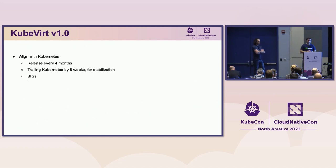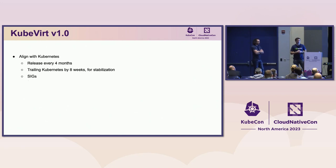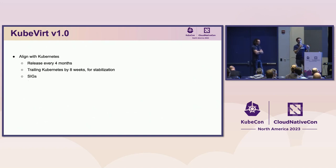Even Kubernetes went through this. When Kubernetes started in 2014, the release cadence was a lot faster, and even as recently as three or four years ago, it was four times a year — now it's changed to three times a year. So a similar progression that KubeVirt has gone through. Now the important thing is there will be three releases a year aligned with Kubernetes. Kubernetes will release, and then there'll be a period of about eight weeks that KubeVirt will spend on stabilization before cutting a KubeVirt release.